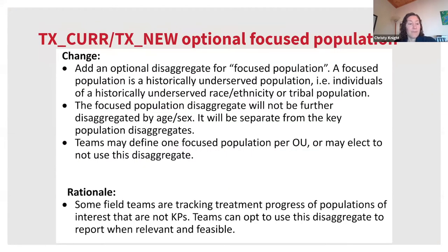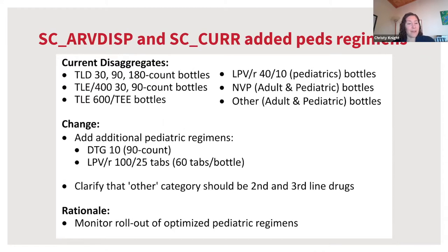For treatment indicators TX-CUR and TX-NEW, partners will have the option of including a disaggregate for focused population. This is separate from key population disaggregates and will not be further disaggregated by age/sex. This is an optional disaggregate that should reflect a historically underserved population, but only one focused population can be used per operating unit, so it should be reported in consultation with PEPFAR teams. The final MER 2.6 change is in supply chain indicators, adding two noted pediatric regimens to the list of disaggregates, allowing monitoring of rollout of optimized pediatric regimens.